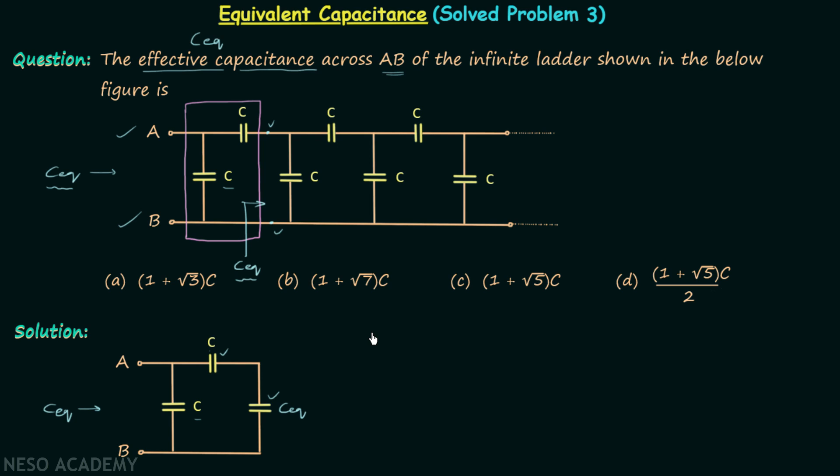Therefore we can have a single capacitor having the value C multiplied to C_eq divided by C plus C_eq. And then that single capacitor will be in parallel with C, so we will add C.